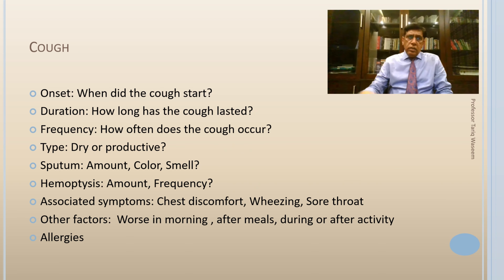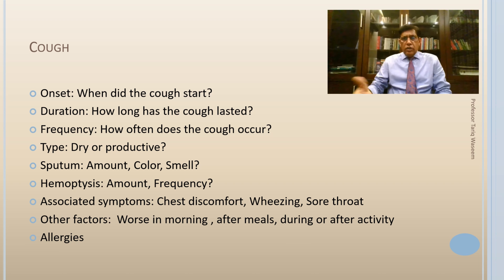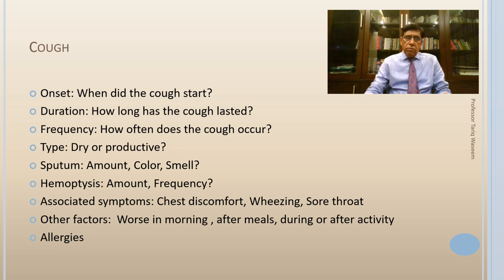For cough: apart from onset, duration, and frequency, note whether it is a dry cough or accompanied by sputum production. If there is sputum, note its amount, color, smell, and whether it is associated with blood-tinged sputum or hemoptysis — how much and how frequently. Note associated phenomena like chest discomfort, wheezing, or sore throat. Cough may be worse in the morning, after meals suggesting reflux esophagitis, or during other activities. It may be a manifestation of bronchial asthma or allergic bronchitis — knowing about allergies helps reach a diagnosis.